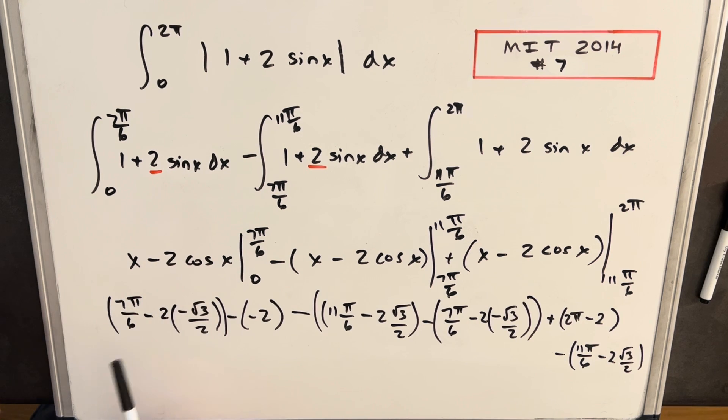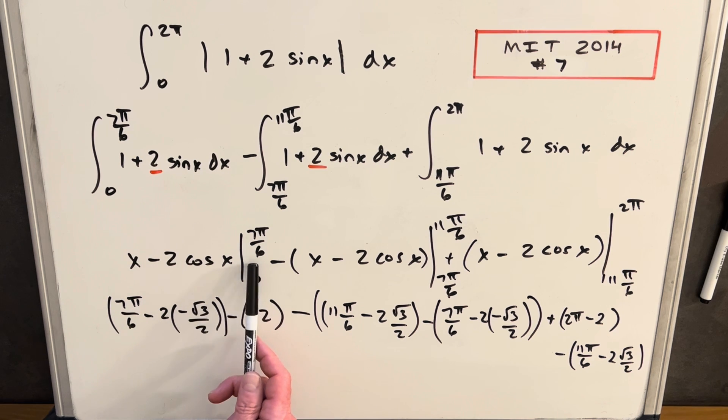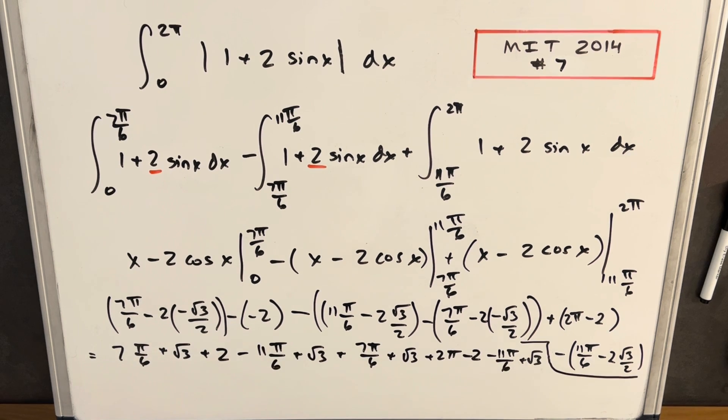Okay, and you can see we have like a big mess on our hands here. It's just a matter of plugging everything in. The only kind of thing to know is that 7π over 6, cosine of x is going to be minus square root of 3 over 2. At 11π over 6, cosine of x is square root of 3 over 2. And then everything else is just repeating it and simplifying everything.